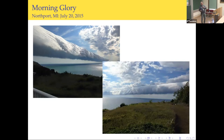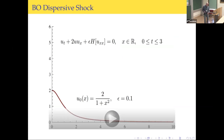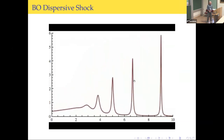If you Google this, you can find another picture taken from an airplane where there are several of these morning glory clouds stacked one after another — some kind of a train of morning glory clouds. The Benjamin-Ono equation is really good at making things like that happen. I have a simulation — actually it's an exact solution — with this initial data and a small parameter epsilon equal to 0.1. You see that bump moves to the right and it produces a whole bunch of these little morning glory clouds. It seems like it might be a good model for this phenomenon.